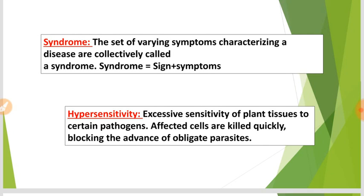Hypersensitivity — excessive sensitivity of plant tissues to certain pathogens. Affected cells are killed quickly, blocking the advantage of obligate parasites. The death of tissues around the pathogen is called hypersensitivity.